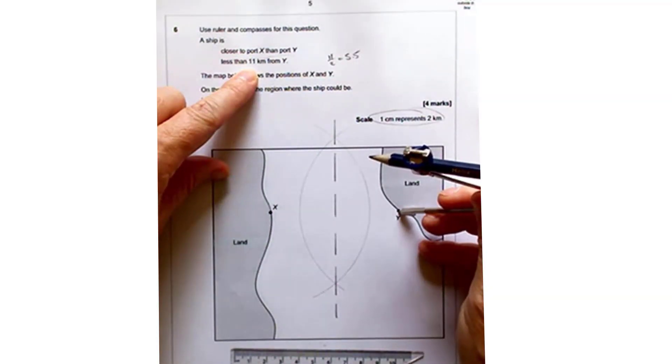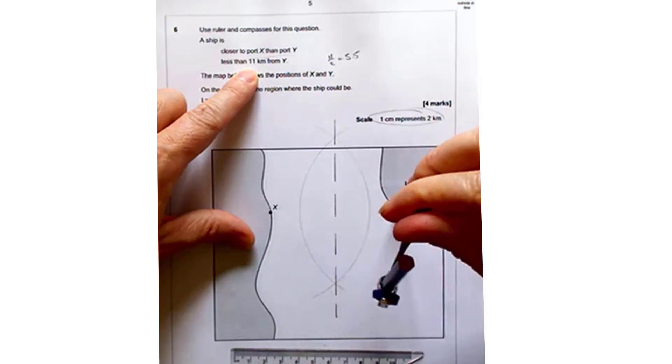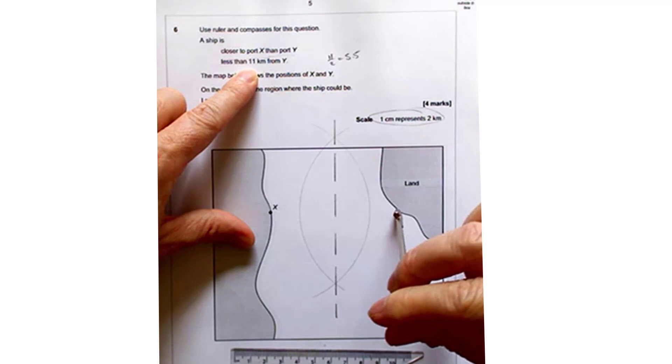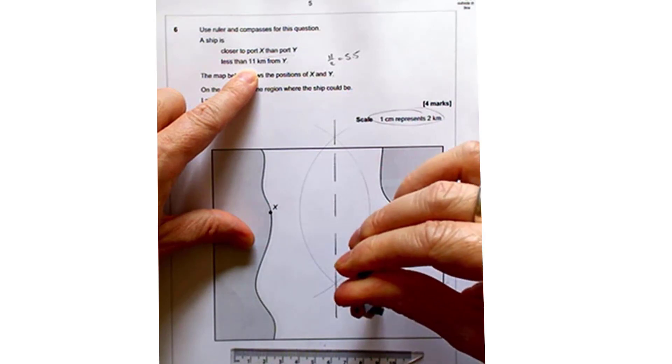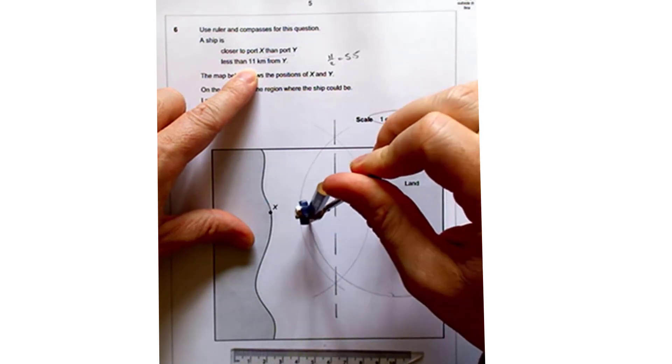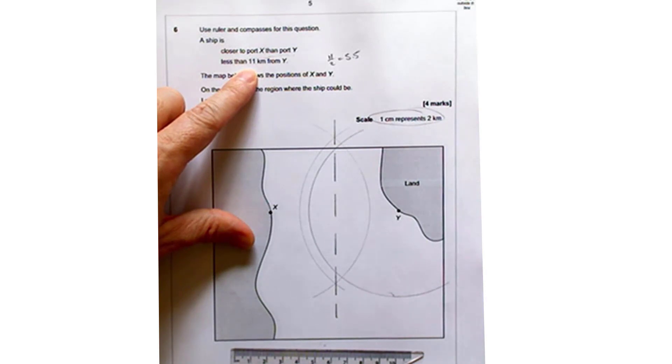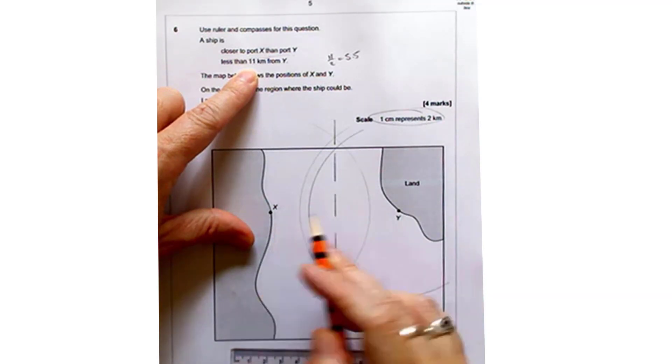Again, every point on this line is going to be 11 kilometers from Y. Oops, let's just do that again. My tip slipped. So all the points on this line are 11 kilometers from Y. So inside the circle must be less than 11 kilometers from Y. So then the region we want has got to be inside that circle and to the left of our perpendicular bisector. So it's this area here.